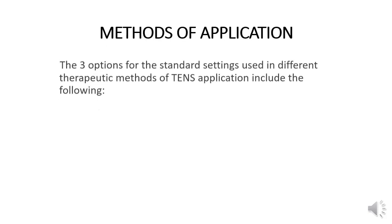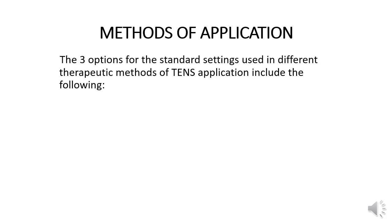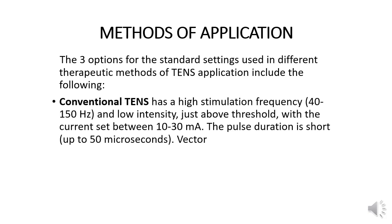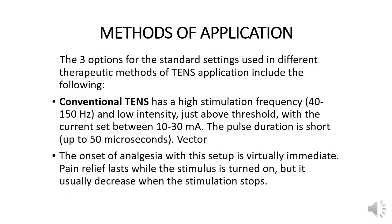The three options for standard settings used in different therapeutic methods of TENS application include: conventional TENS, which has a high stimulation frequency of 40 to 150 Hertz and low intensity just above threshold, with the current set between 10 to 30 mA. The pulse duration is short, up to 50 microseconds. The onset of analgesia with this setup is virtually immediate.